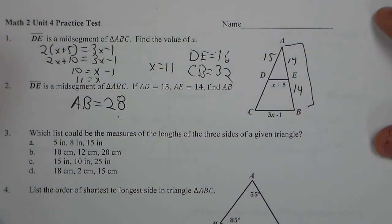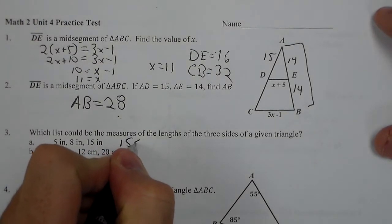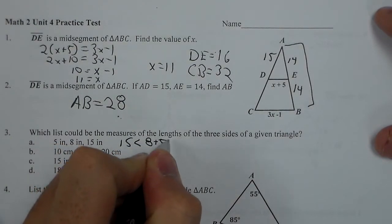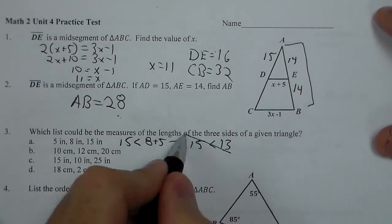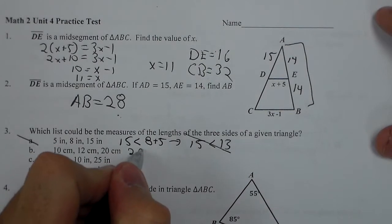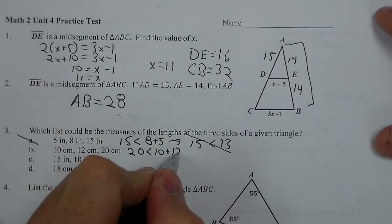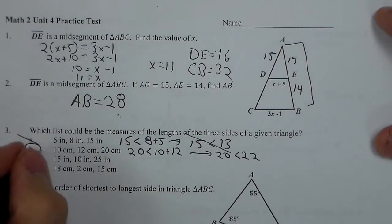For number 3, we need to figure out what could be the 3 sides of a triangle. Our rule here is that the longest side has to be less than the sum of the other 2. So in our first one we get 15 less than 8 plus 5. Well, that tells us 15 is less than 13. That is false. So this does not make a triangle. The second one I get 20 is less than 10 plus 12, which tells me that 20 is less than 22. That works.